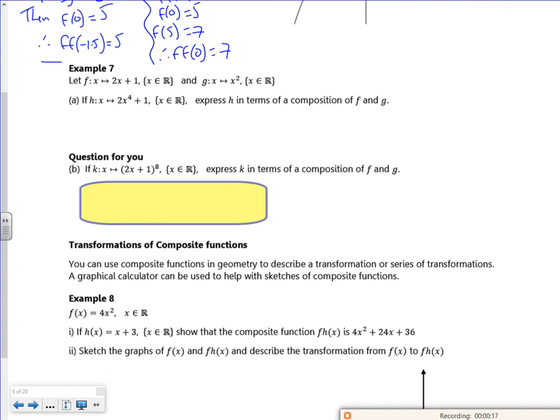So f of x, this is the mapping line, it just means f of x. So f of x is 2x plus 1 where x's are reals, and g of x is x squared where x's are reals.